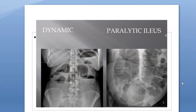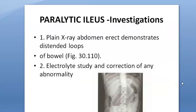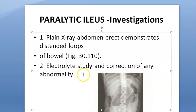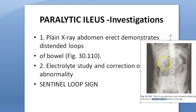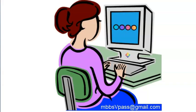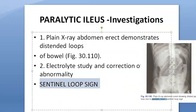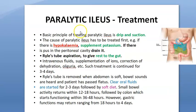The key X-ray finding to remember in paralytic ileus is the sentinel loop sign. This distinguishes it from dynamic or mechanical obstruction, where air-fluid levels are the hallmark. Always write sentinel loop sign for paralytic ileus.